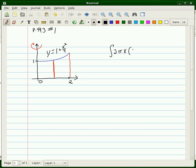The bottom is 0, so it's just 1 plus x squared over 4 dx. We're building our shells from 0 to 2 along the x-axis.